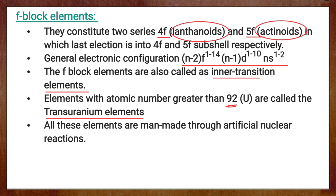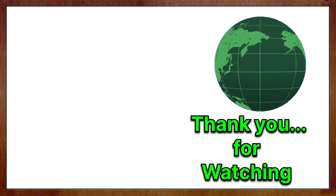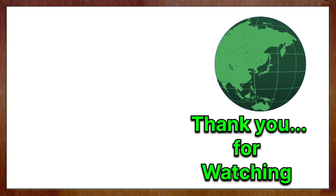So we now know that elements of the periodic table are classified into four blocks: S block, P block, D block, and F block. In the next video, I will explain how you can identify the period number and group number of an element when provided with its atomic number. I hope you find this video helpful. Please like and share this video, subscribe to my channel, and press the bell icon to get notified about upcoming videos. Thank you for watching. Stay connected, keep learning, take care.